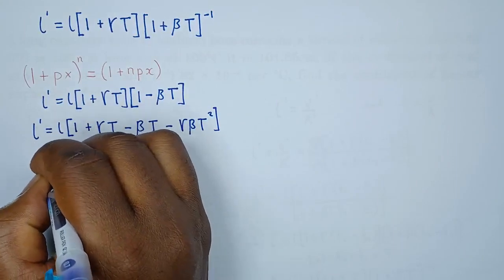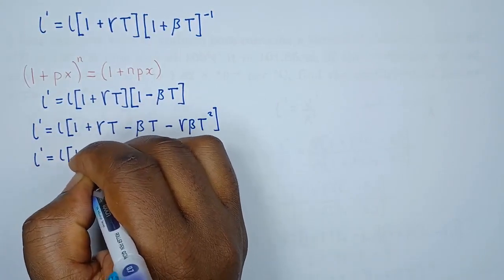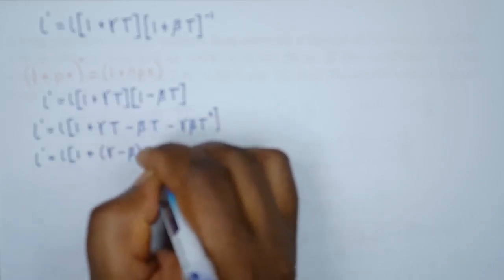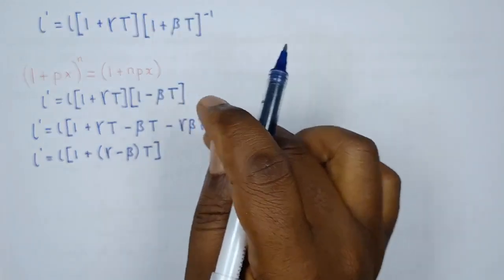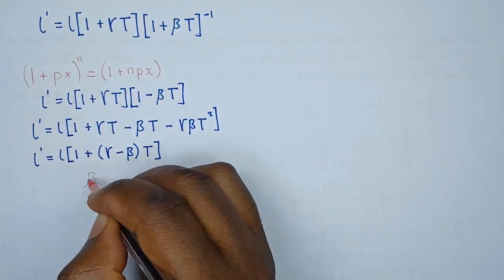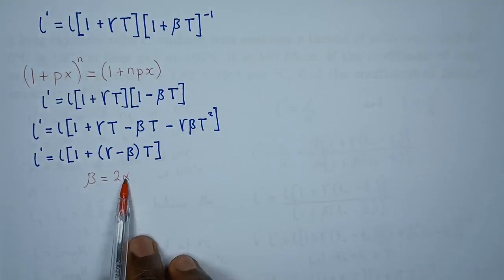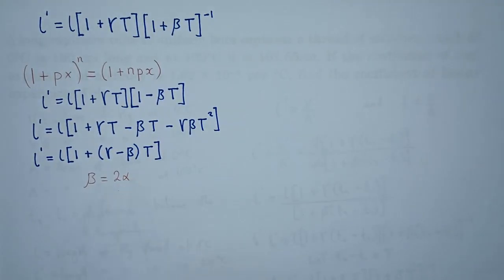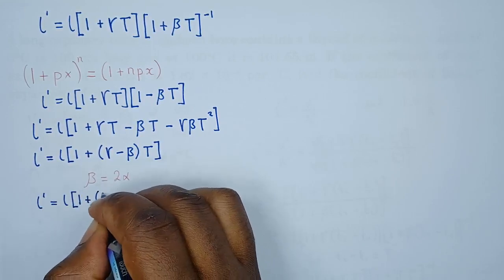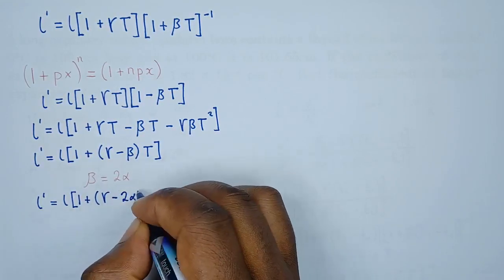Since the coefficient of superficial expansion is twice the coefficient of linear expansion, beta equals 2 alpha, where alpha is what we are looking for. Substituting beta with 2 alpha, we get L prime equals L times (1 plus (gamma minus 2 alpha) T).